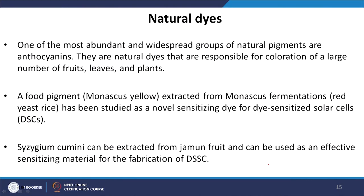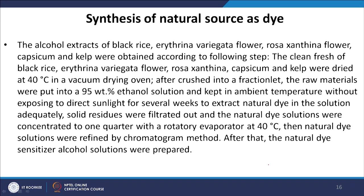A food pigment called monascus yellow, extracted from monascus fermentation red yeast rice, has also been studied as a novel sensitizing dye for DSSCs. Cyanidin-3-glucoside can be extracted from jamun fruit and used as an effective sensitizing material. Other natural dye sources studied include black rice, erythrina variegata flower, rosaxanthin, capsicum, and kelp.